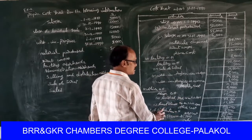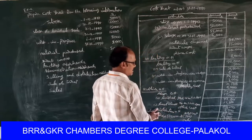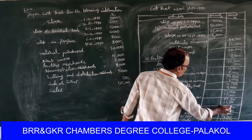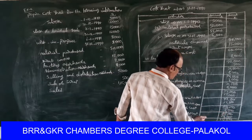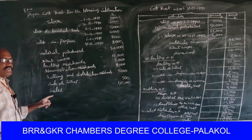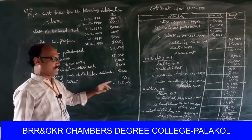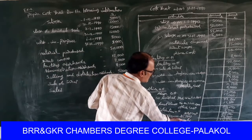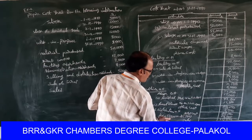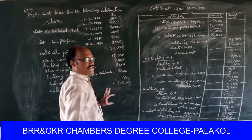Sales and distribution expenses are added to office cost to find total cost. Sales and distribution overheads: five thousand rupees. Eighty thousand five hundred plus five thousand equals eighty-five thousand five hundred, treated as total cost. Sales amount is one lakh fifteen thousand. Profit equals one lakh fifteen thousand minus eighty-five thousand five hundred, which is twenty-nine thousand five hundred rupees.